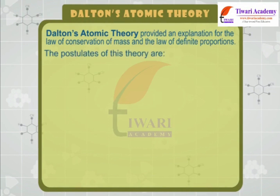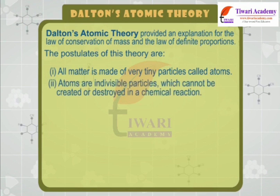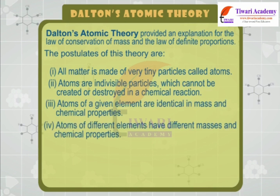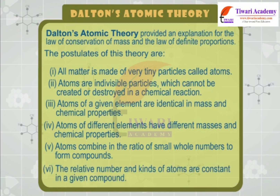The postulates of Dalton's atomic theory are: all matter is made of very tiny particles called atoms; atoms are indivisible particles which cannot be created or destroyed in a chemical reaction; atoms of a given element are identical in mass and chemical properties; atoms of different elements have different masses and chemical properties; atoms combine in the ratio of small whole numbers to form compounds; and the relative number and kinds of atoms are constant in a given compound.